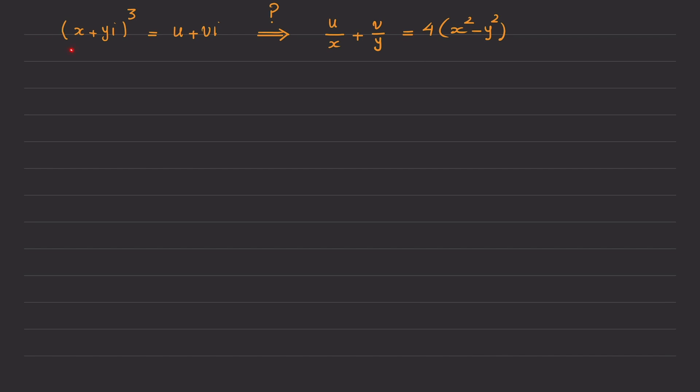If you look at the information provided in the problem, I see that I have a complex number on the left which is equal to a complex number on the right. Of course, the complex number on the right is already in its standard form, but the complex number on the left is not in its standard form because of this exponent 3.